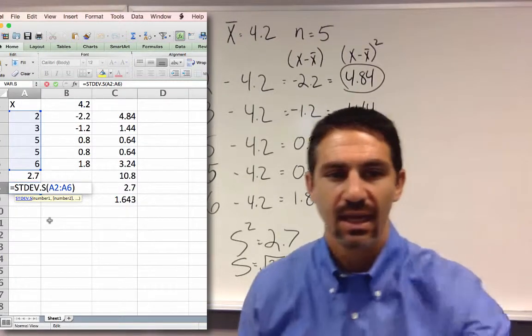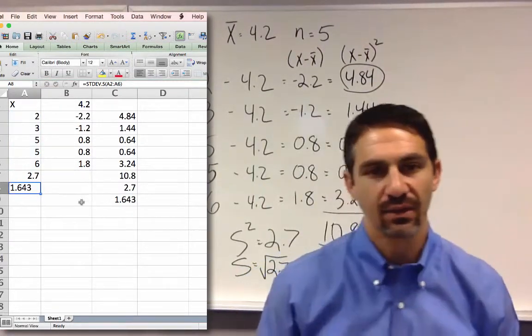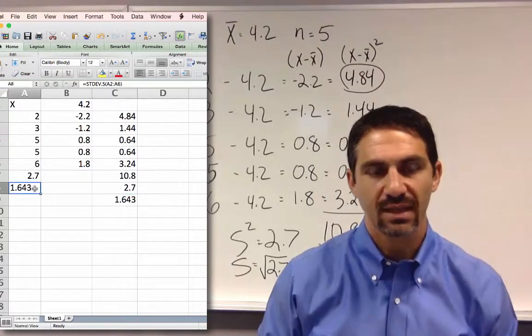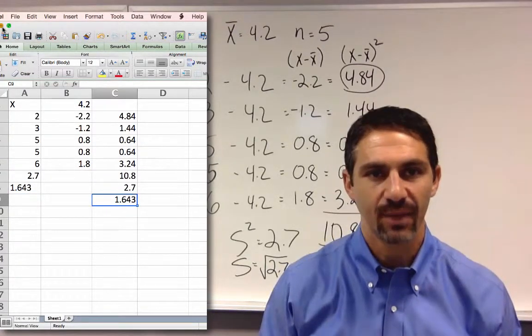Then A2 to A6, and it gives you the same value. So this and this are the same calculated different ways.